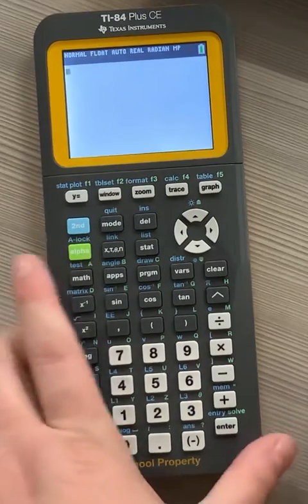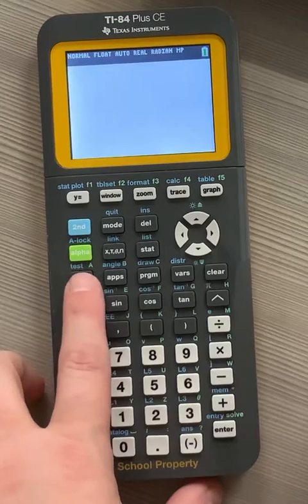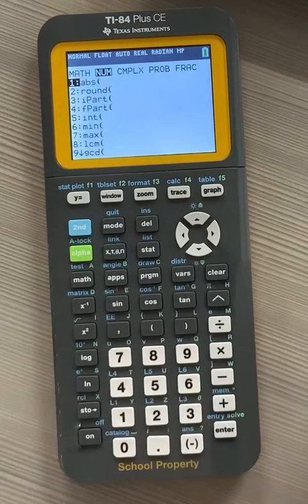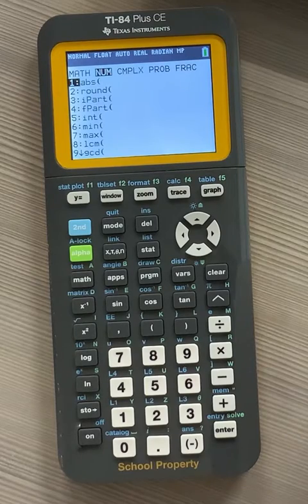So on your calculator, find your math key, press math, and arrow over to number. N-U-M for number.